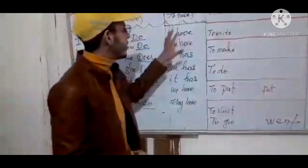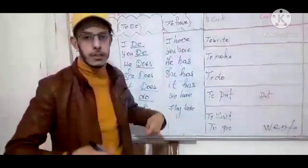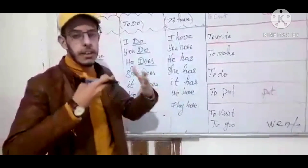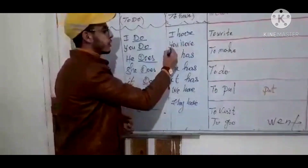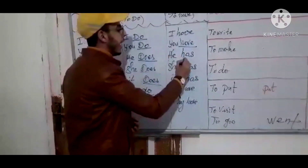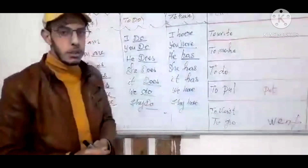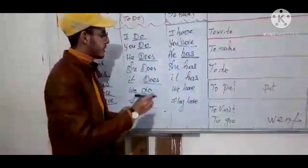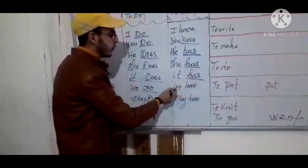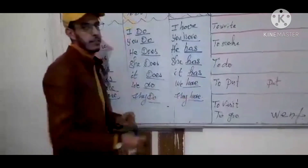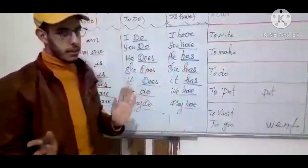Now let's move to the third and last verb in the first exercise, which is the verb 'to have' — to express something that you own, something that belongs to you. I have, you have, he has. It's an exceptional case: she has, it has, we have, they have. We only change he, she, it into 'has.' That's all.